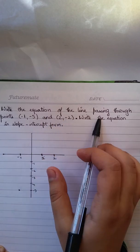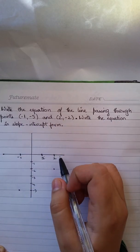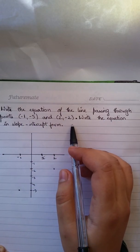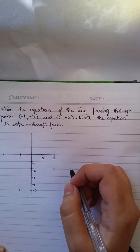So the question is, write the equation of the line passing through the points (-1, -5) and (2, -2). Write the equation in slope-intercept form.